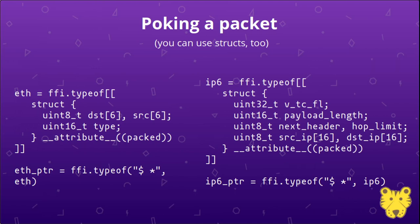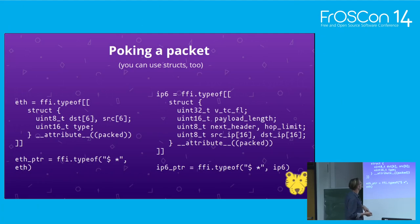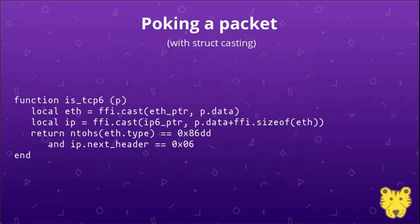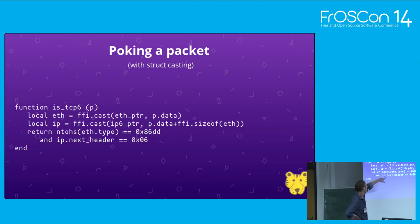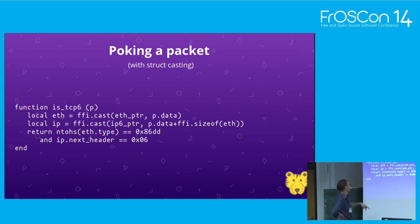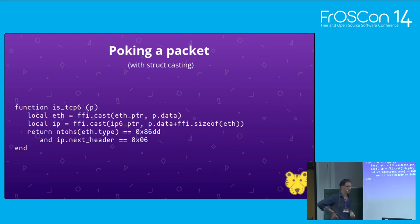We define pointer types to these structs. Then we might write the previous example — this time for IPv6 — by casting the beginning of the packet to the Ethernet header type, and at the offset of the IP header, casting the remaining bytes to the IPv6 header type. We can then check if the Ethernet type is IPv6 (a multi-byte value, so we convert from network byte order to little-endian since we're on x86), and then check if the IPv6 next-header field is the TCP identifier. You can also assign different values there — this goes both ways.